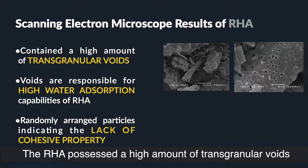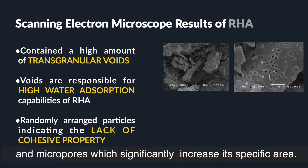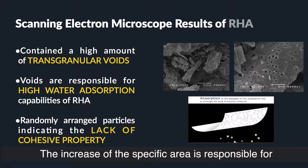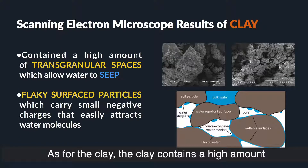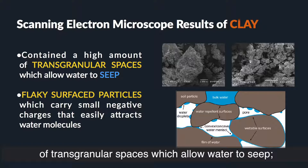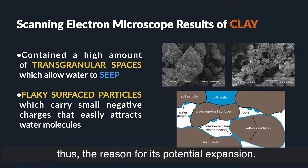The RHA possesses a high amount of transgranular voids and micropores, which significantly increase its specific surface area. The increase in specific surface area is responsible for RHA's water adsorption capabilities. As for the clay, it contains a high amount of transgranular spaces which allow water to ingress, and this is the reason for its potential expansion.